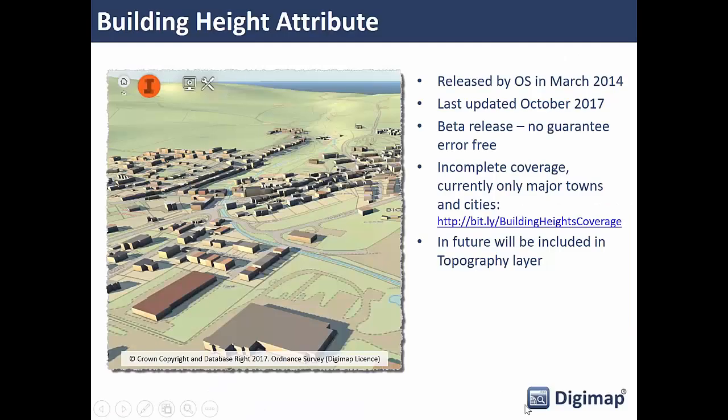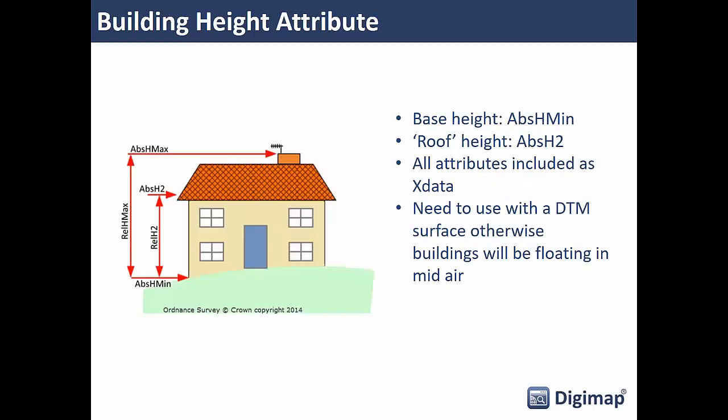Ordnance Survey will be including this as part of MasterMap Topography Layer in the future, but at the moment it's supplied as a separate dataset. We do some work to convert it into CAD-friendly formats, making it available in DWG format — the native drawing format for AutoCAD. Combined with the MasterMap Topography Layer, the two datasets work together using the same building polygons, and for any 3D modeling applications these two are really good datasets.